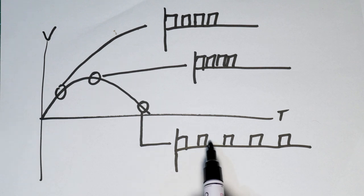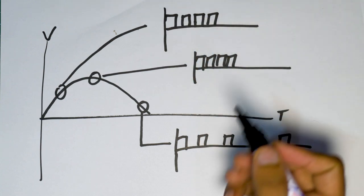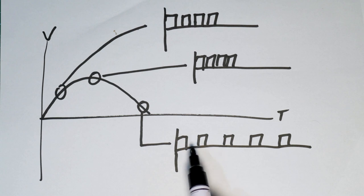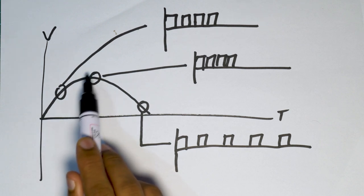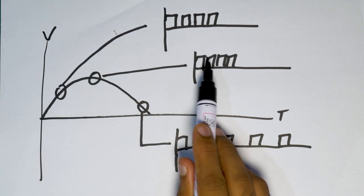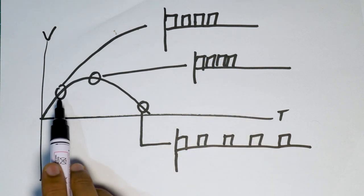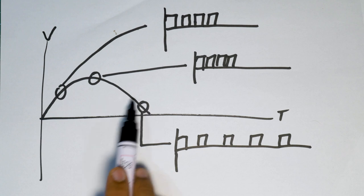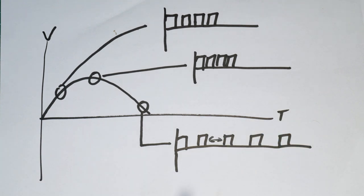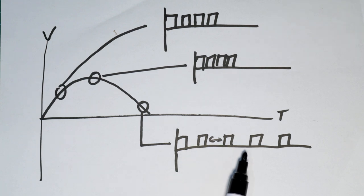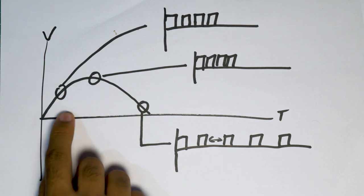PWM works by injecting tiny gaps of off digital signals into a digital signal. By injecting these off signals at a very high rate, it can effectively emulate something like an analog voltage graph. At peak voltage, there are very few gaps where the digital signal is turned off. As the voltage drops, there are more and larger gaps. The physical gaps between the digital high signals are greater in length, and by flipping the digital signal on and off very quickly, you can emulate an analog voltage signal.